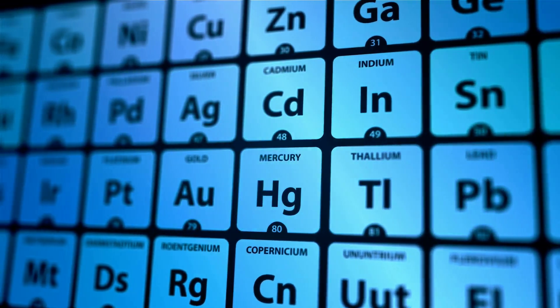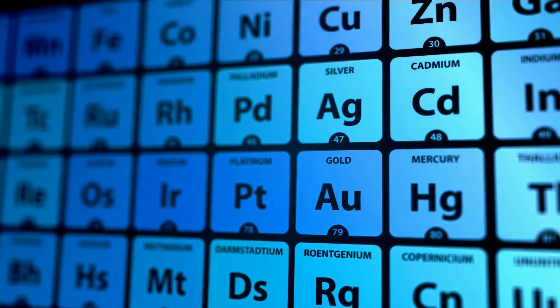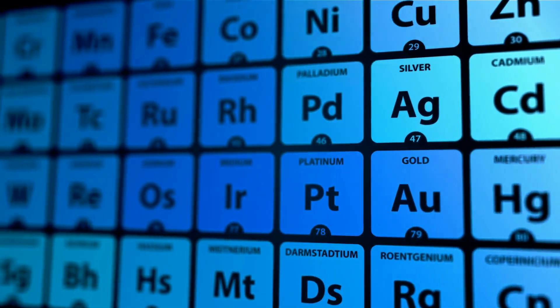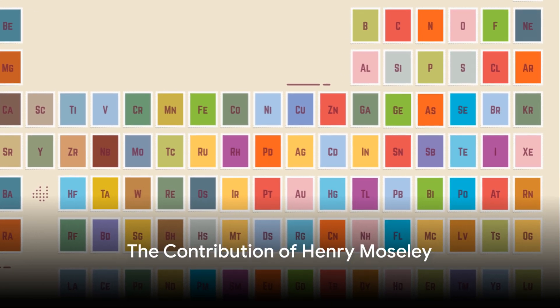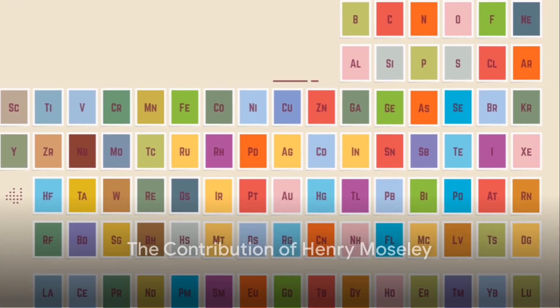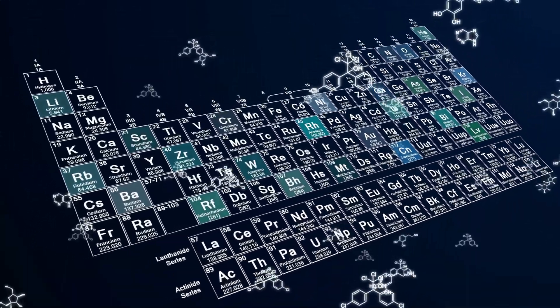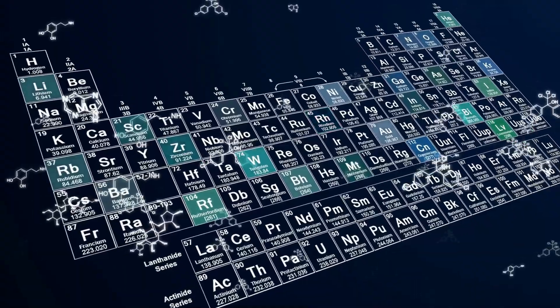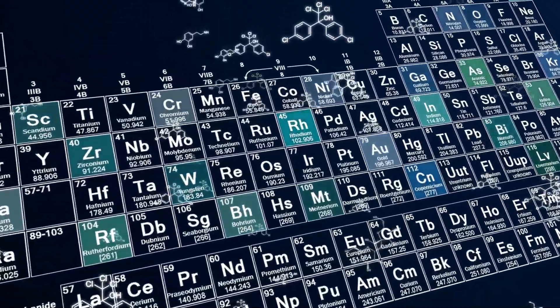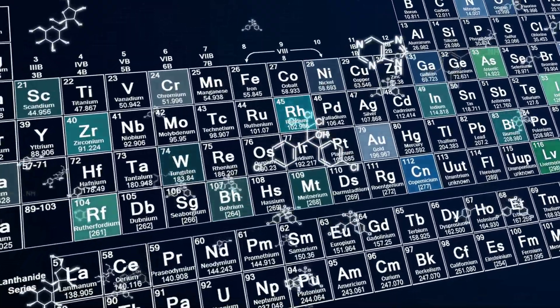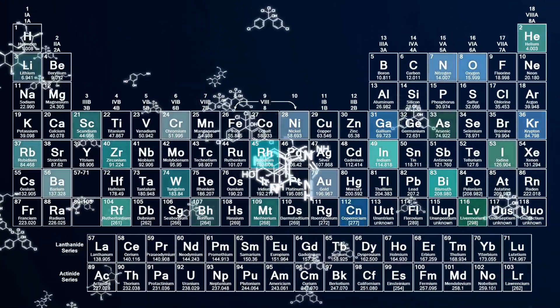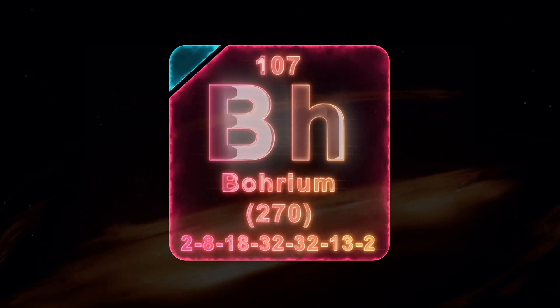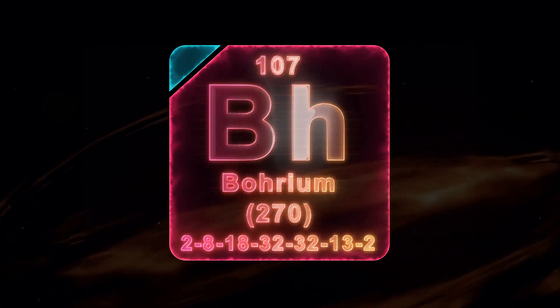And when these elements were eventually discovered, Mendeleev's predictions were remarkably accurate. Fast forward to the early 20th century: British physicist Henry Moseley made a significant contribution to the development of the periodic table. He discovered that the atomic number, not atomic weight, was the more fundamental property. This led to the modern definition of the periodic law and the modern form of the periodic table.